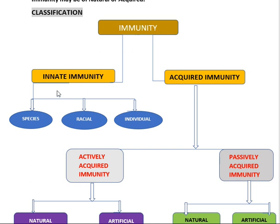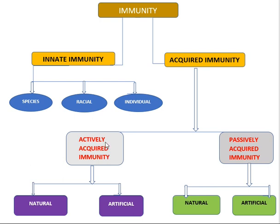Innate immunity is again of three types: species, racial, and individual. Acquired immunity is classified into two types: actively acquired immunity and passively acquired immunity. Both actively and passively acquired immunity can be obtained either by natural method or by artificial method.